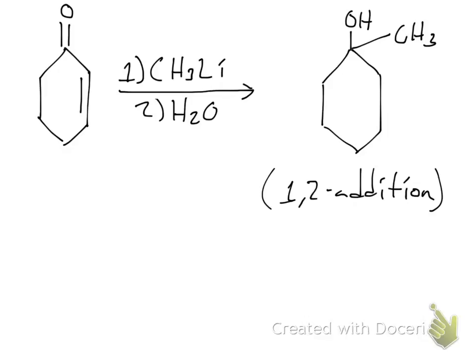This is going to be a 1,2-addition because oxygen is counted as 1 and this first carbon here will be counted as 2. We're adding something onto the oxygen, we're protonating it with our second reagent, water. And we are adding this methyl group onto carbon 2. So that's a 1,2-addition.